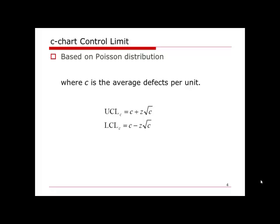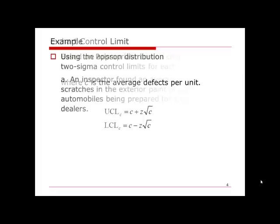Now let's take a look at an example and see how to identify which chart should be used and how to follow the formula to construct the control limit. The first part asks us: an inspector found an average of 3.9 scratches in the exterior paint of each of the automobiles being prepared for shipment to dealers.